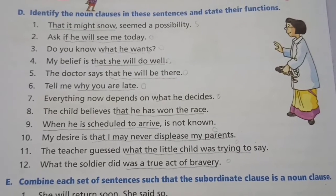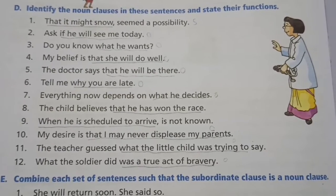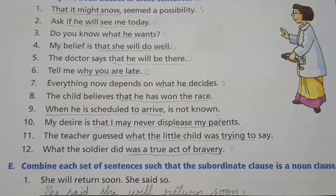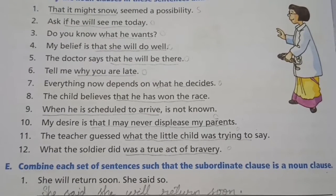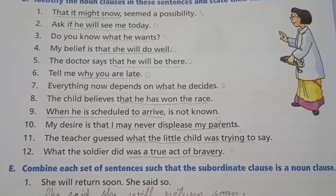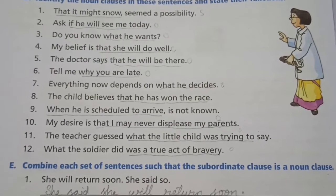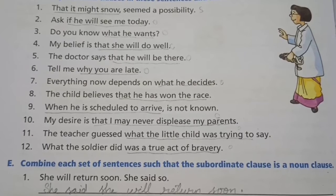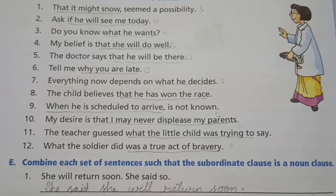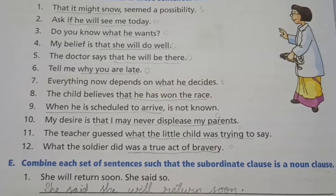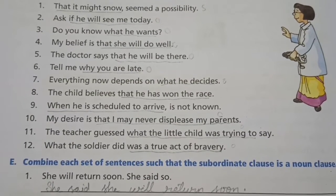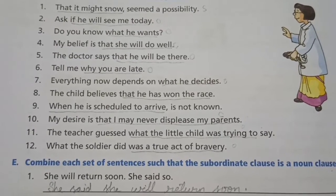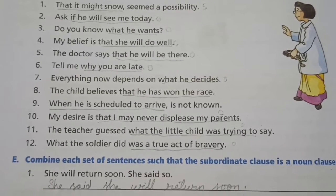Fifth: 'that he will be there' is the noun clause and it is the object. Sixth: 'why you are late' is the noun clause and it is the object. Seventh: 'what he decides' is the noun clause and it is the object of a preposition. Eighth: 'that he has won the race' is the noun clause and it is the object. Ninth: 'when he is scheduled to arrive' is the noun clause and it is the subject. Tenth: 'that I may never displease my parents' is the noun clause and it is the complement. Eleventh: 'what the little child was trying to say' is the noun clause and it is the object. Twelfth: 'was a true act of bravery' is the noun clause and it is the object.